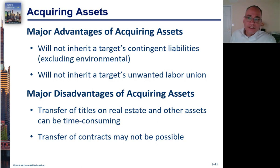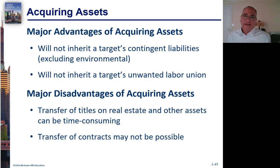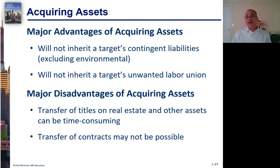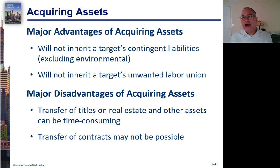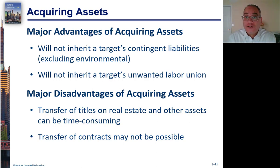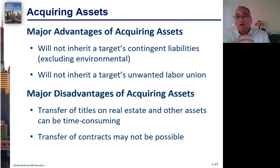When you buy assets, you're not getting all the different contracts the company is engaged in. For example, if you buy a factory, you're just buying a building and not bringing in the employees. Whereas if you buy the company, you're getting the factory with the employees, who may be part of a labor union with a difficult relationship. When you buy assets, you're not going to get all the baggage the company has been carrying over the years.